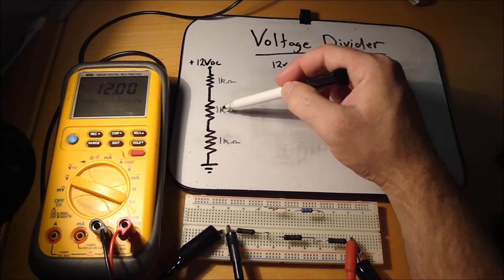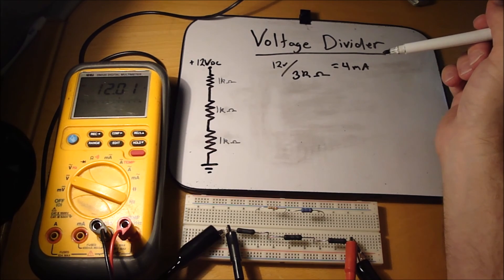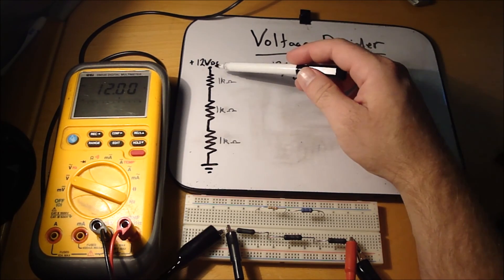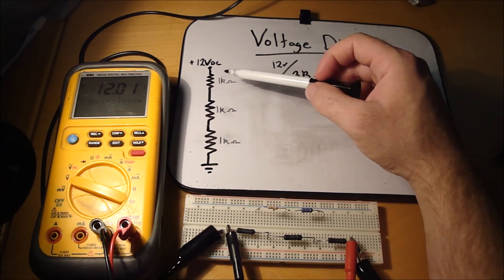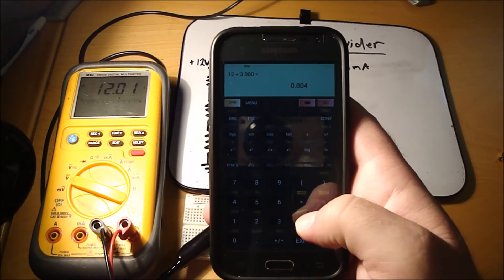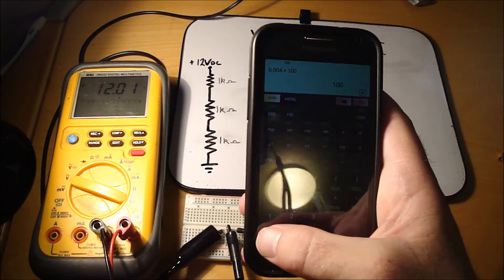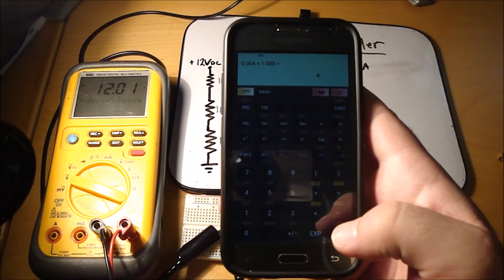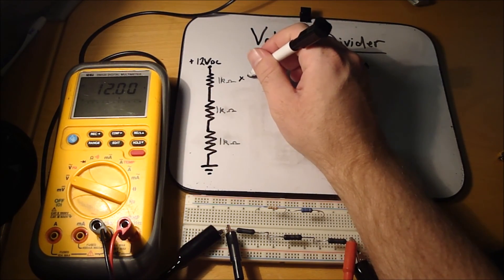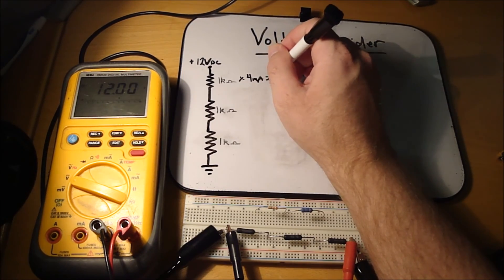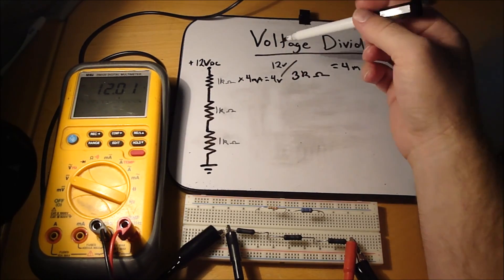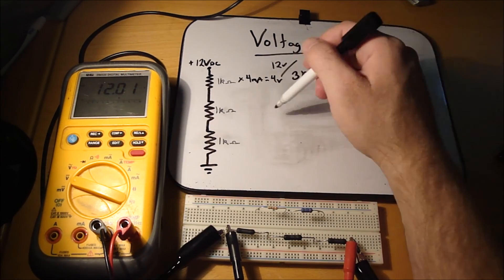Now we want to calculate the voltage drop across each resistor using Ohm's law: voltage equals resistance times current. With 4 milliamps flowing through 1 kilo-ohm, that's 4 milliamps times 1,000 ohms equals 4 volts. Since all resistors are the same value with the same current, they each drop 4 volts.